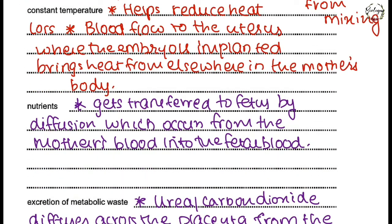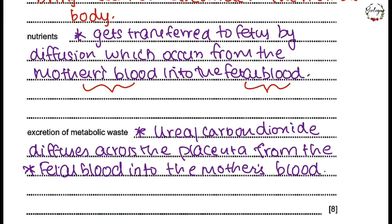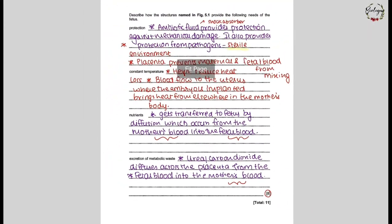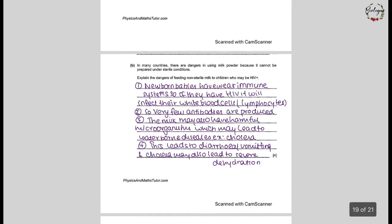Moving on to nutrients — vitamins, minerals, and all the essential biomolecules or food groups required for the fetus to have a balanced diet. Nutrients get transferred to the fetus by diffusion, which occurs from the maternal blood to the fetal blood. Lastly, for excretion of metabolic waste, the mother excretes the fetal metabolic waste — urea and carbon dioxide diffuse across the placenta from the fetal blood into the maternal blood. This is an eight-mark question, so ensure that you have all these points covered to get full marks.